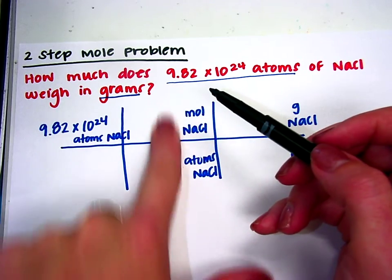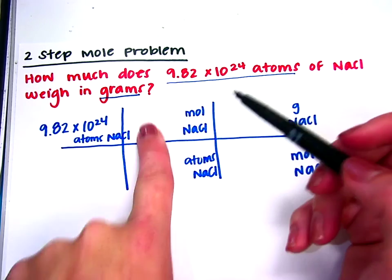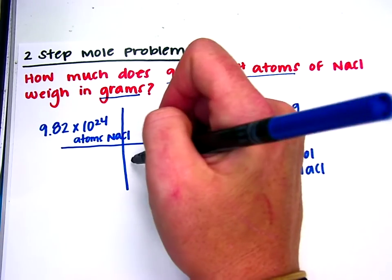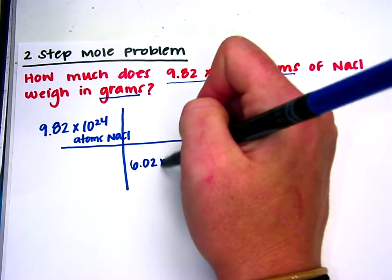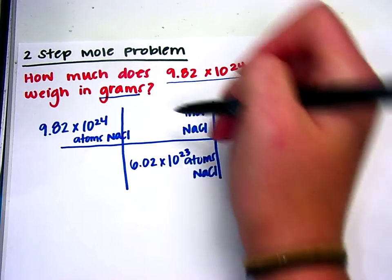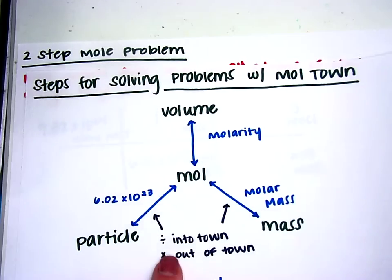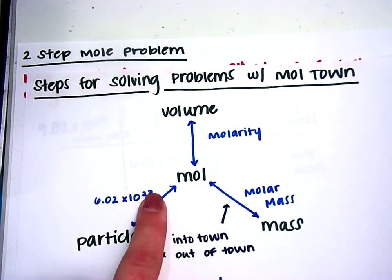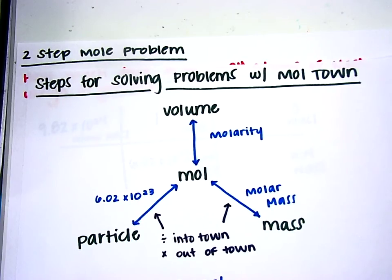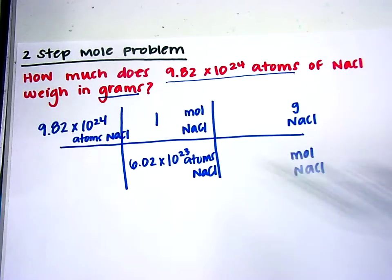For this first step, it's how many atoms are in a mole. So 6.02 times 10 to the 23rd atoms are in one mole. If you're using Mole Town, it gives you right here this 6.02 times 10 to the 23rd number. You just have to know that that's how many atoms are in a mole.